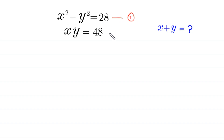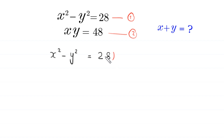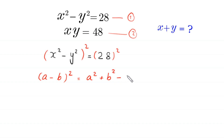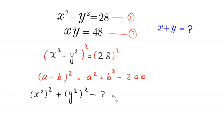Let's call this equation 1 and this equation 2. We square both sides of equation 1: x squared minus y squared is equal to 28. By using the algebraic identity (a minus b) whole squared equals a squared plus b squared minus 2ab, we get (x squared minus y squared) whole squared equals x squared whole squared plus y squared whole squared minus 2 times x squared y squared, which equals 28 squared, which is 784.